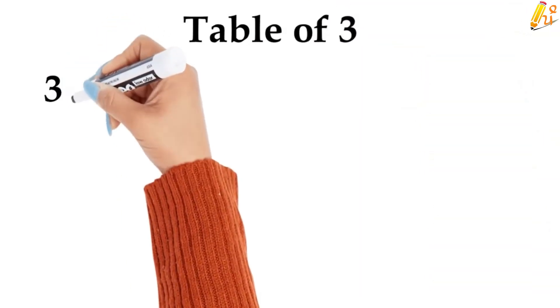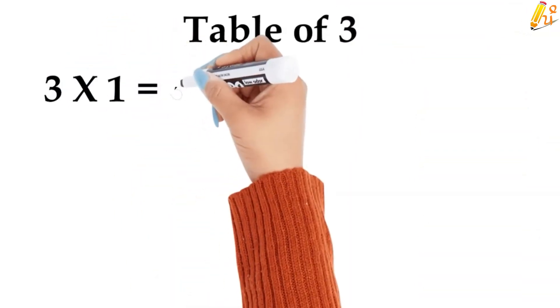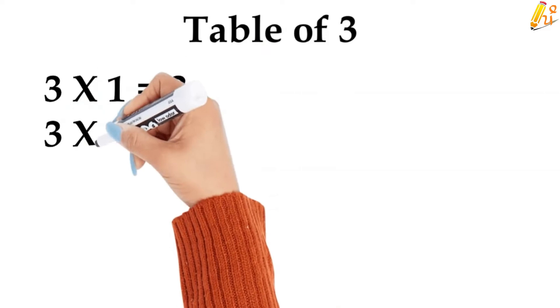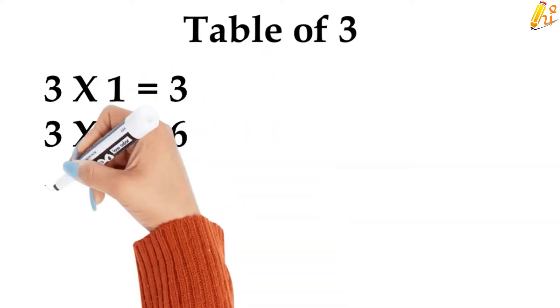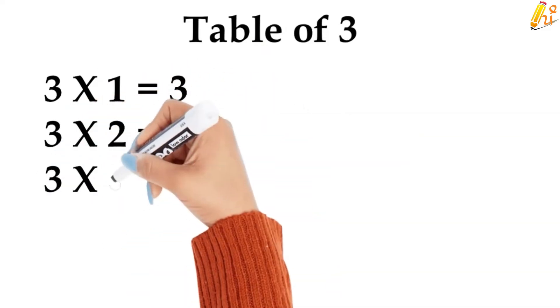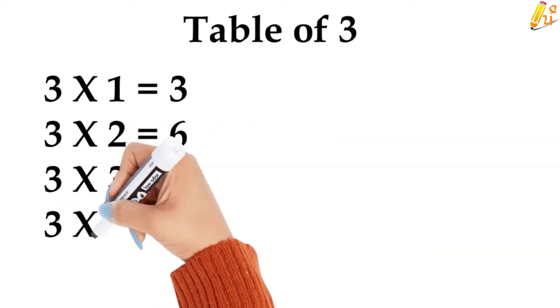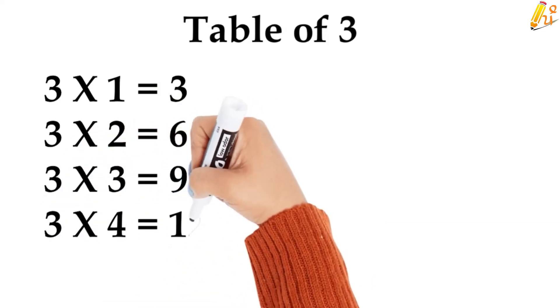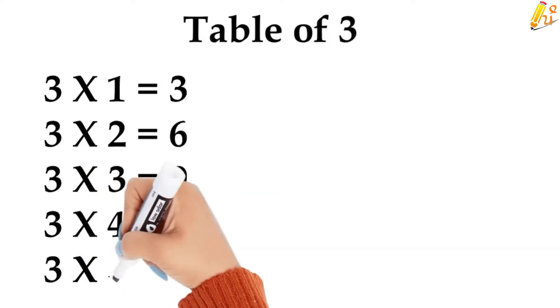3 1s are 3, 3 2s are 6, 3 3s are 9, 3 4s are 12, 3 5s are 15